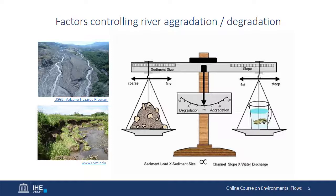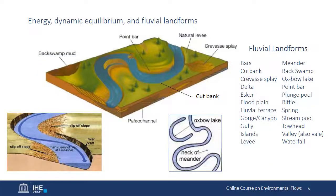The interacting processes of sediment erosion, deposition, and transport produce a wide variety of fluvial landforms, including riffles, pools, towheads, and terraces. Many of these are ecologically significant. The full range of features possible in natural rivers is worth exploring independently.